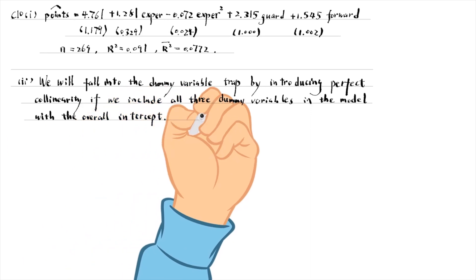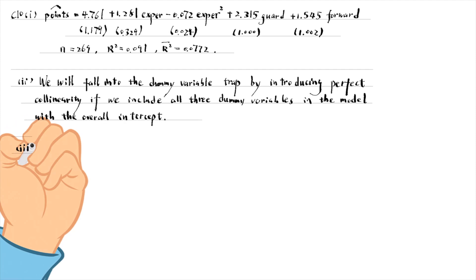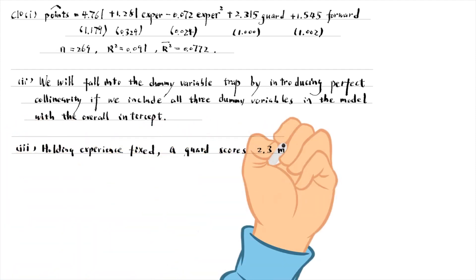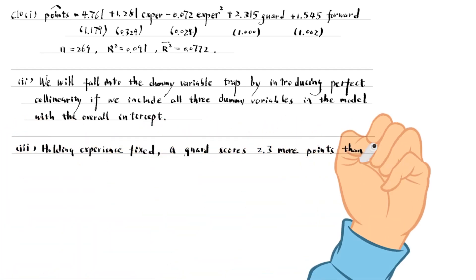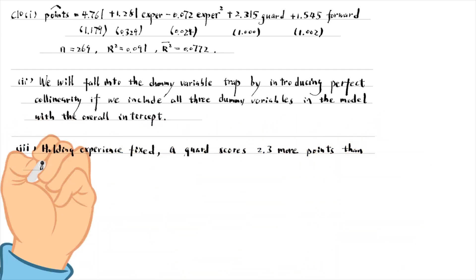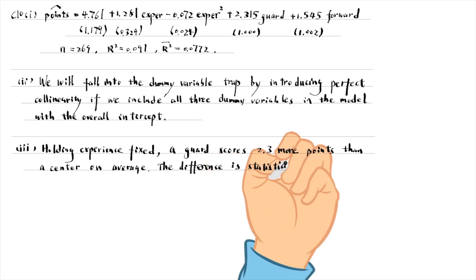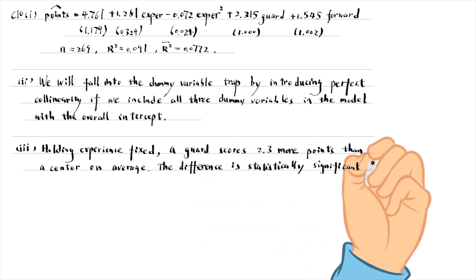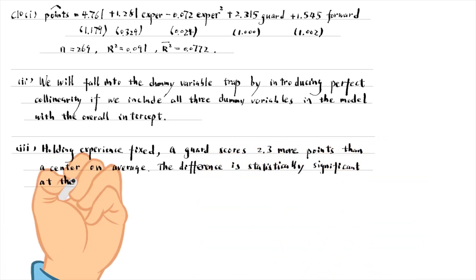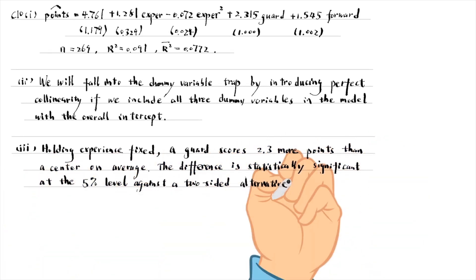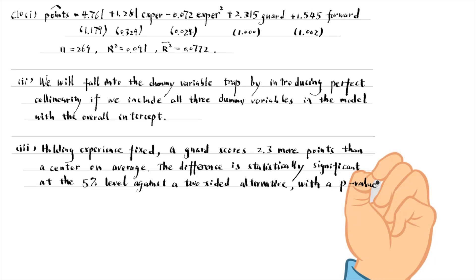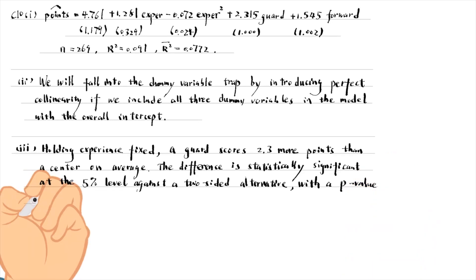For part 3, holding experience fixed, a guard scores 2.3 more points per game than a center on average.